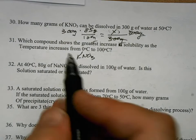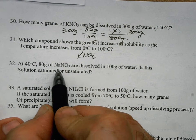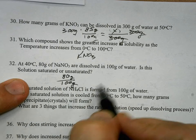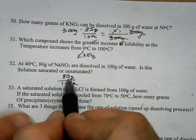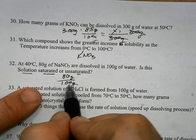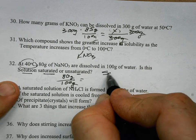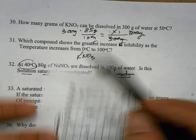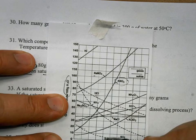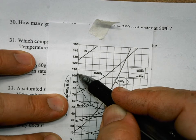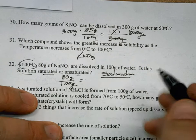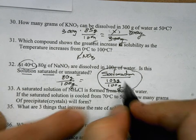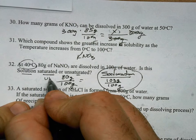Number 32: at 40 degrees Celsius, 80 grams of NaNO3 are dissolved in 100 grams of water. Is this saturated or unsaturated? Looking at the chart for NaNO3 at 40 degrees, it looks like about 103 grams can be dissolved per 100 grams. Since 80 grams is much less than 103 grams, this is an unsaturated solution.